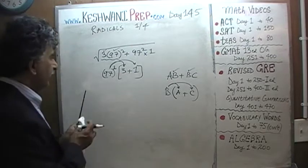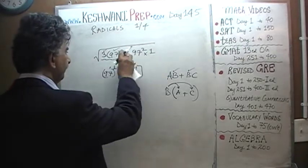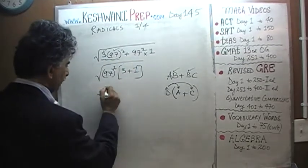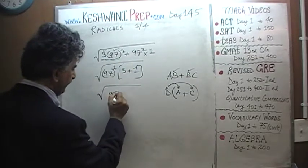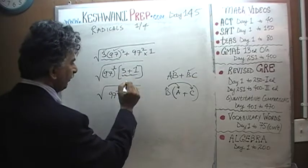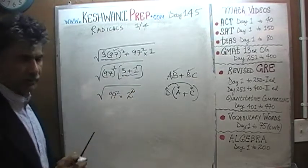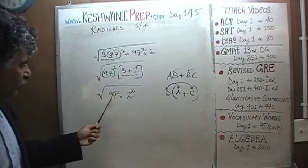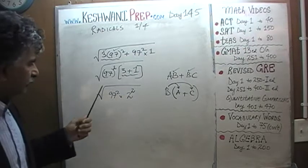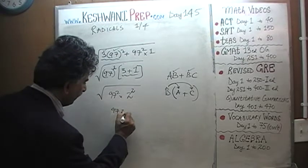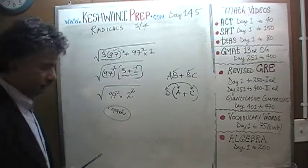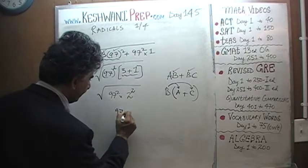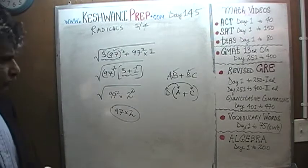Now we have to take the square root of it. Before we do, we can write 97 squared times (3 plus 1), which is simply 97 squared times 4, and 4 is 2 squared. So the square root of 97 squared times 2 squared is simply 97 times 2. Our answer is 97 times 2.